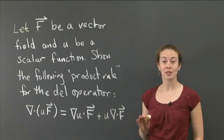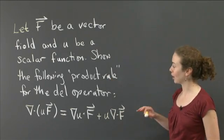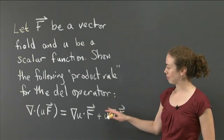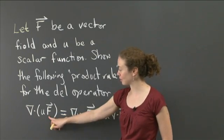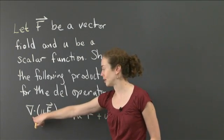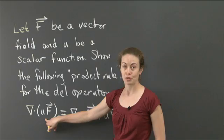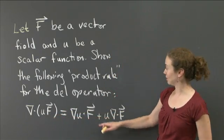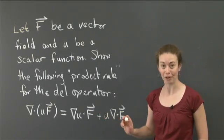OK, welcome back. Again, what we wanted to do is prove this sort of pseudo product rule for the del operator. And what we're doing is we're trying to see what happens if you have a vector field and you multiply it by a scalar function and you apply the del operator to that. So we're going to see if we actually come up with what we should on the right-hand side. In fact, we will.